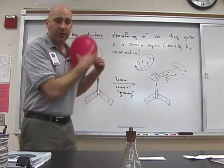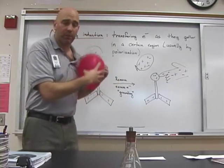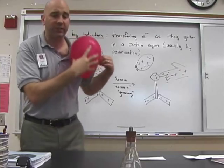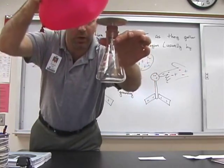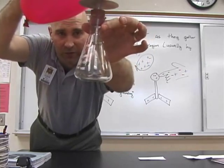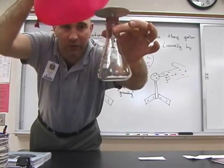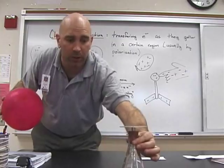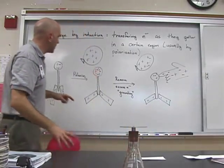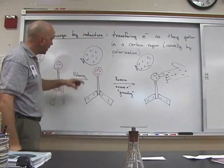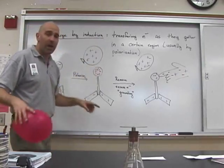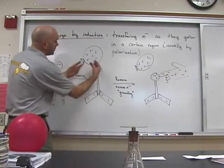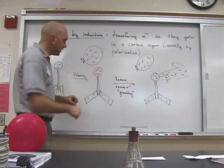But if I bring a charged object next to it, I do a process that we talked about before called polarization. And in essence, I can make those leaves fly away from each other because I have polarized the electroscope. In other words, I've brought a charged object, my balloon, very close to the top. And all the electrons race to be as close to the charged object as possible.